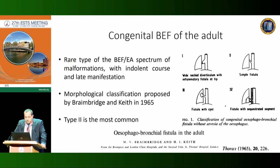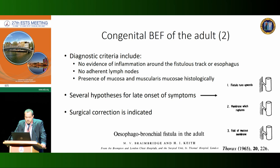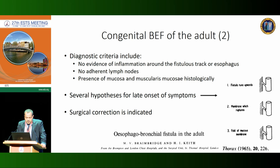Regarding benign fistulas, congenital ones can become symptomatic even in adults. The first classification comes from 1965 by Brainbridge, who classified this kind of fistula into four types — Type 2, the simple fistula, is the most frequent. Diagnostic criteria include no evidence of inflammation around the fistula tract or the esophagus, and importantly, histological demonstration of the presence of an epithelium mucosa and muscularis mucosa in the neck of the fistula. These fistulas become symptomatic in adulthood usually because of their very small diameter — like a pinhole — and their upward course, sometimes with a membrane or mucosal fold covering them. In all these cases, surgical correction is always indicated with very good results.